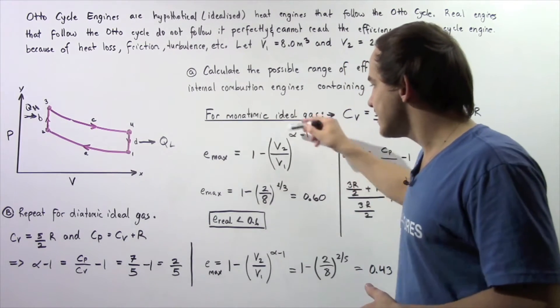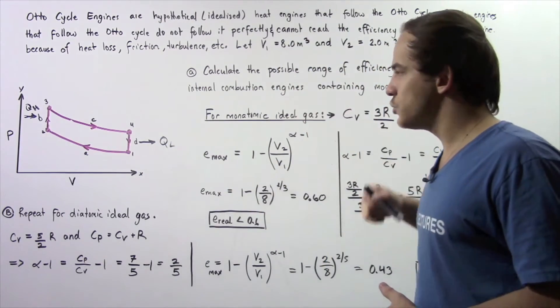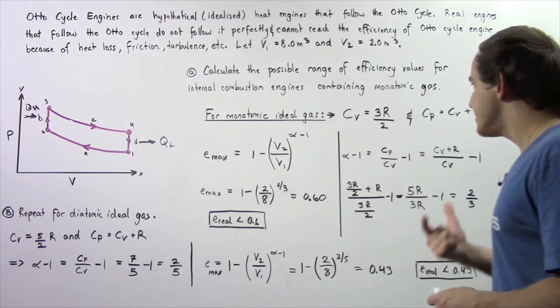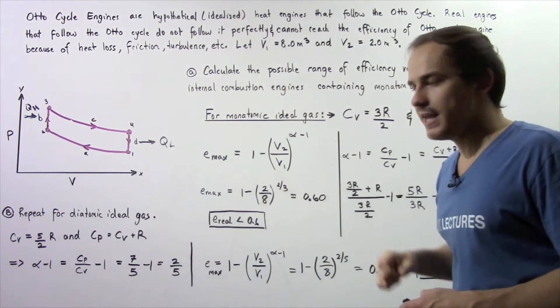So Emax is equal to this where V1 is the volume at position 1 and V2 is the volume at position 2. So first we essentially want to use these two facts to calculate what the alpha is.